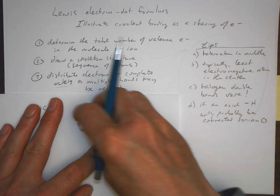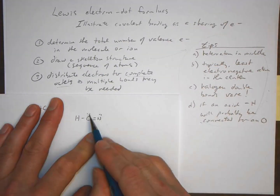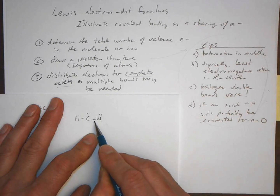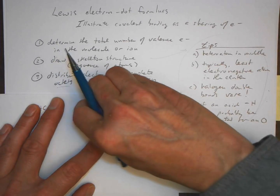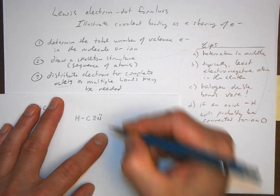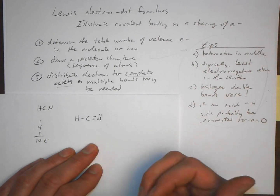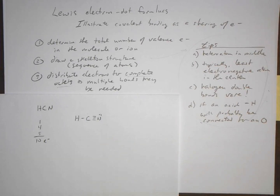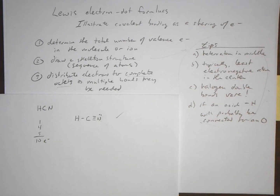We need to share pairs of electrons and make multiple bonds. We take two electrons from the nitrogen lone pair to make a double bond — now carbon has eight electrons but nitrogen still only has six. So we make a triple bond between carbon and nitrogen. Now hydrogen has its two electrons, carbon has eight electrons, and nitrogen has eight. This is a reasonable Lewis structure for HCN.